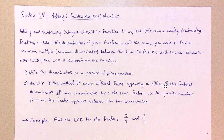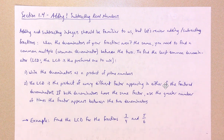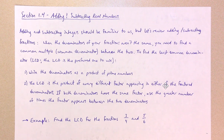Adding and subtracting integers should be familiar to us — nothing really crazy happening there. But I do want to review adding and subtracting fractions, specifically the case when the denominators of your fractions are not the same. When this is the case, you need to find a common multiple between the bottoms of those two fractions — that is, you need to find a common denominator, and ideally the least common denominator, because it's going to save us some work later on.